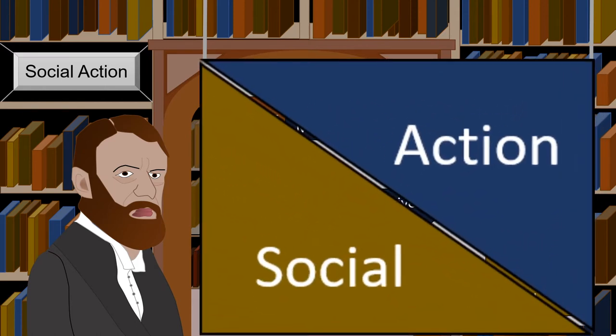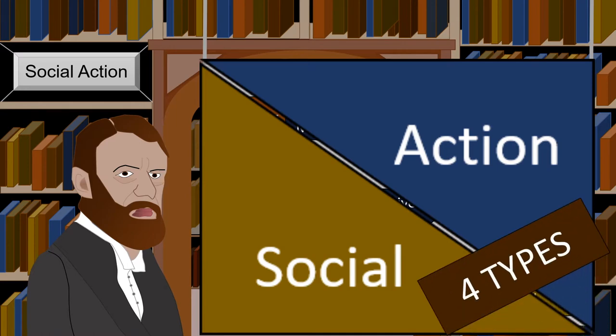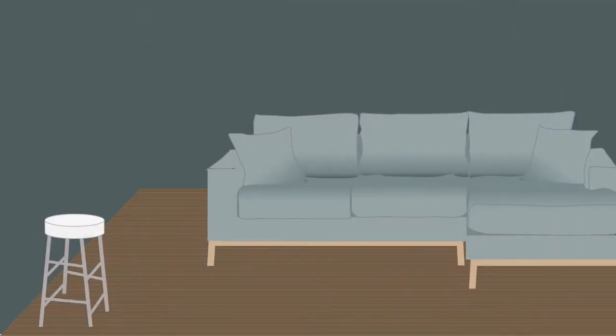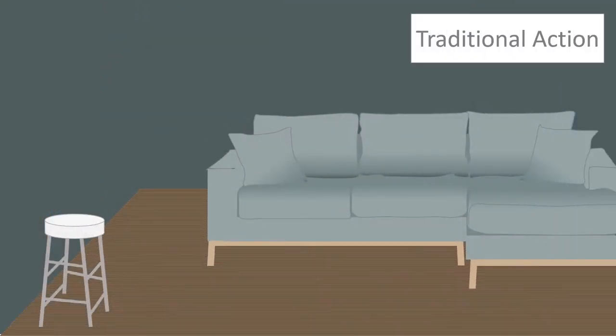Weber also defined four types of social action, which are all based upon the subjective meaning of an individual's intentions. The first being traditional action. This is the type of social action which can be represented through traditions or rituals. It is something we do out of habit, something that is passed on generationally.